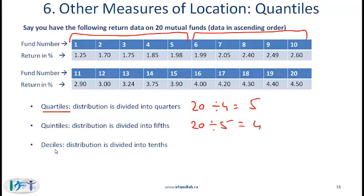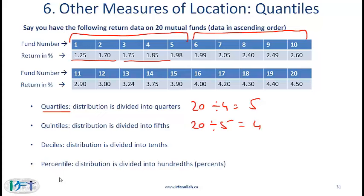Dividing into deciles means dividing into tenths — with 20 numbers, each decile contains 2 observations. Percentiles divide the distribution into hundredths or percents.